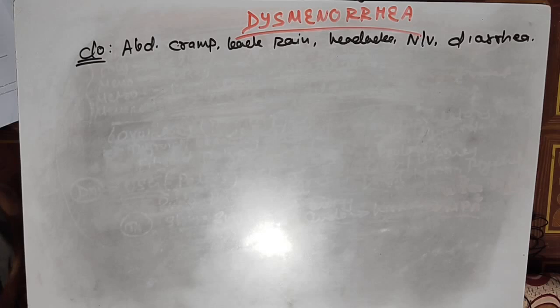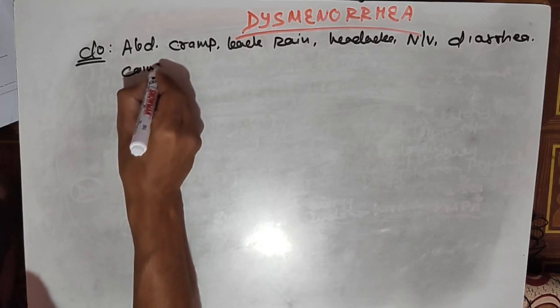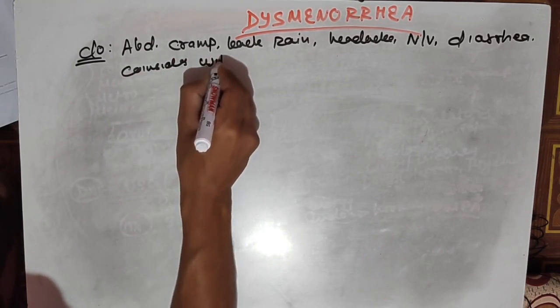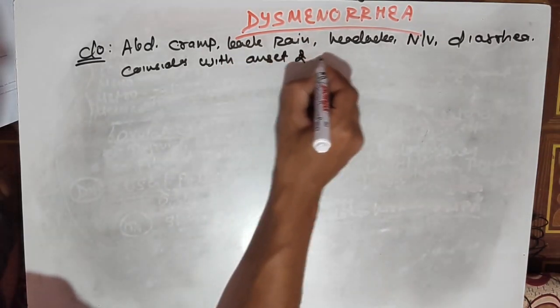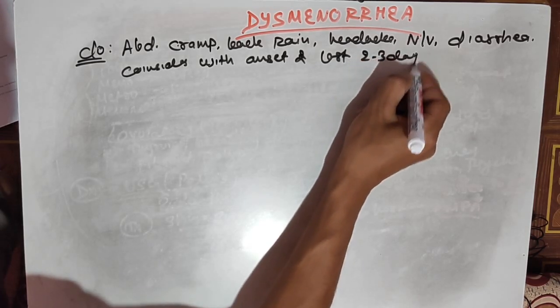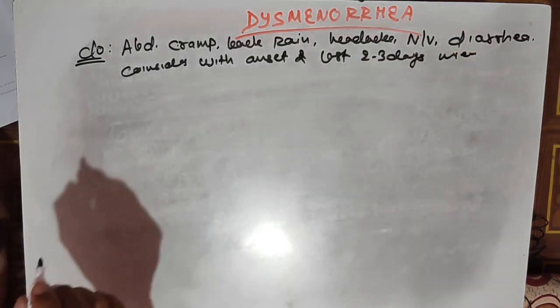The symptoms coincide with the onset of menstruation and may last for two to three days of the menstrual period.